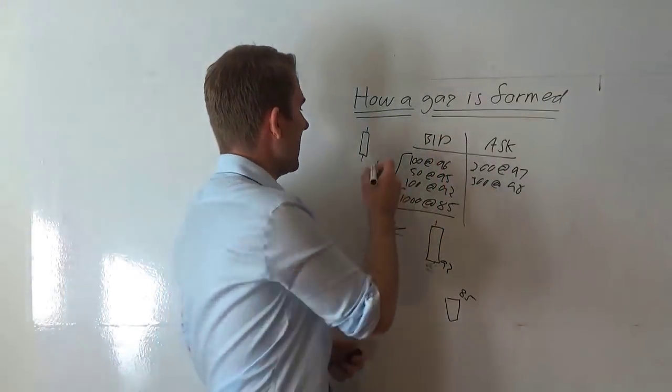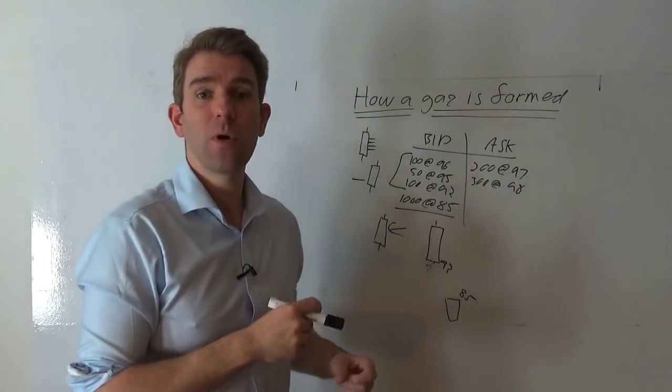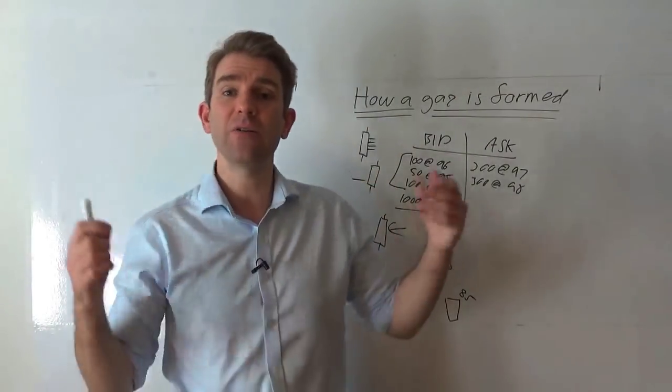That's exactly what's happened, because the way that the price is printed on a chart is when a trade is executed, that level is then printed, and if we have a big gap in that, and a big gap in the time as well, you're going to get a gap in the candle.